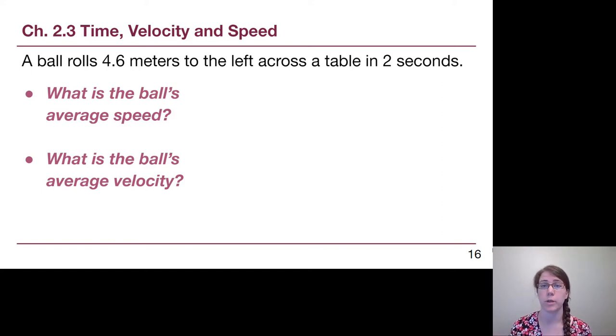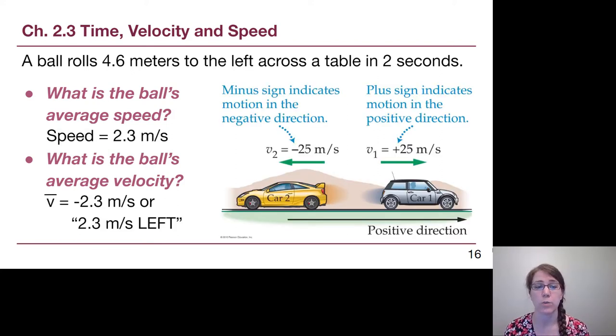Okay, so the ball's average speed cares about the distance and the elapsed time. We're told that it rolls 4.6 meters, the time is two seconds, and so we get 2.3 meters per second. What is different about the velocity? What piece of information in that statement at the top do we now have to care about for velocity? Hopefully we thought about the idea of left being a direction which velocity needs. And so left in our kind of standard sense is going to be the negative direction. So the average velocity would be negative 2.3 meters per second, or it would be completely valid to say the phrase 2.3 meters per second left. But we do need an indication of some kind that we have a direction and that we're including that understanding of direction.